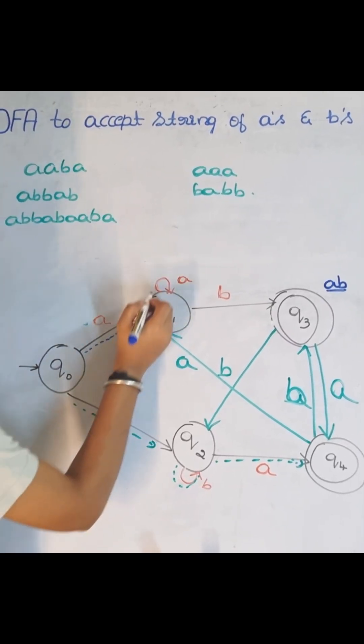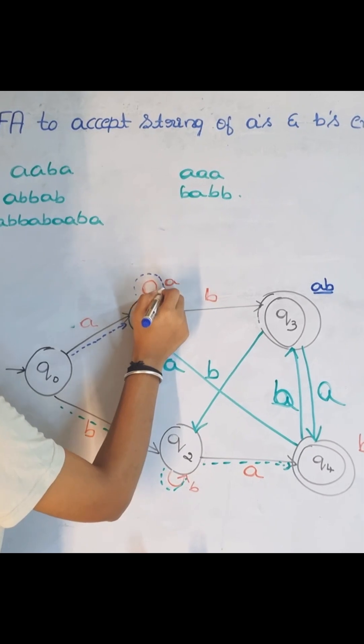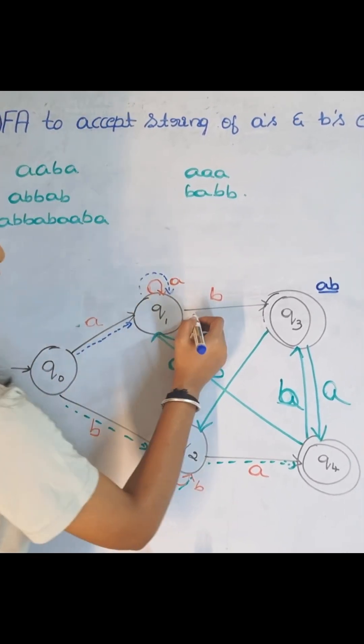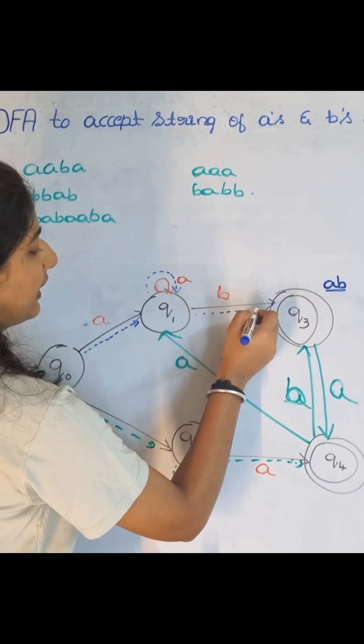In Q1 state, if I get A, I should be there in this state only, and if I got B here, I am moving to next state.